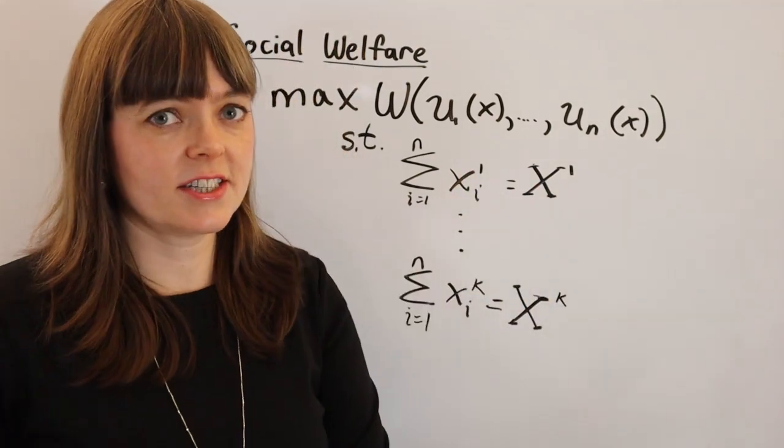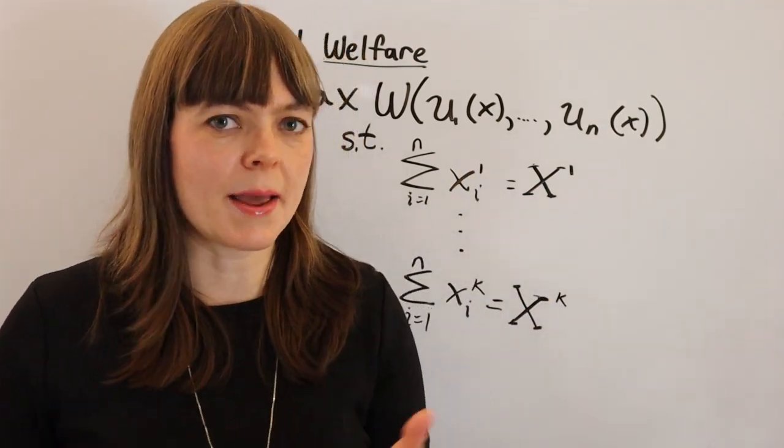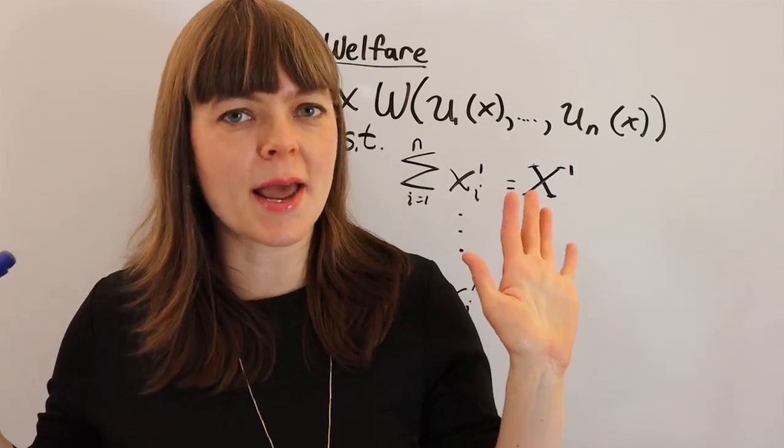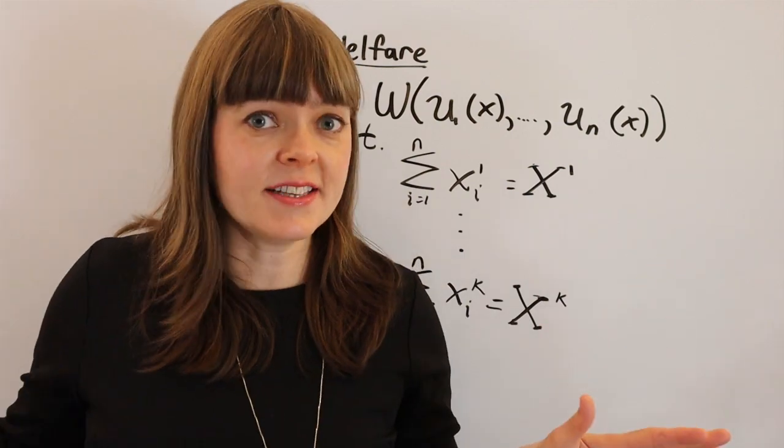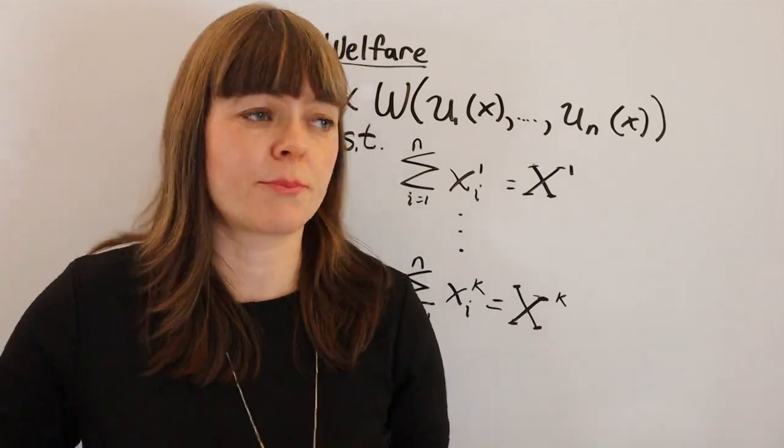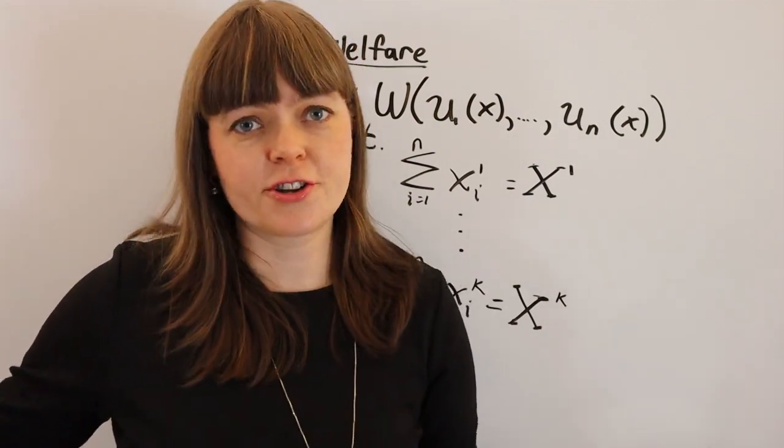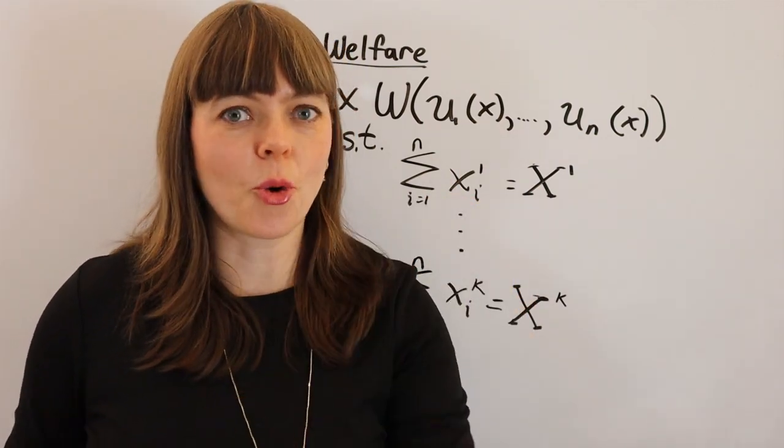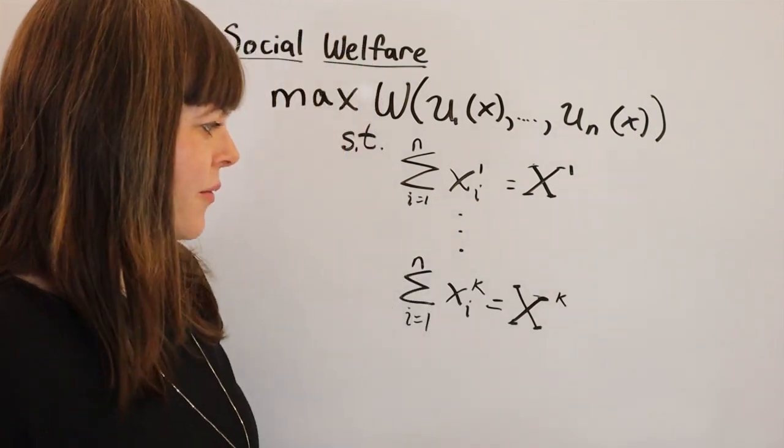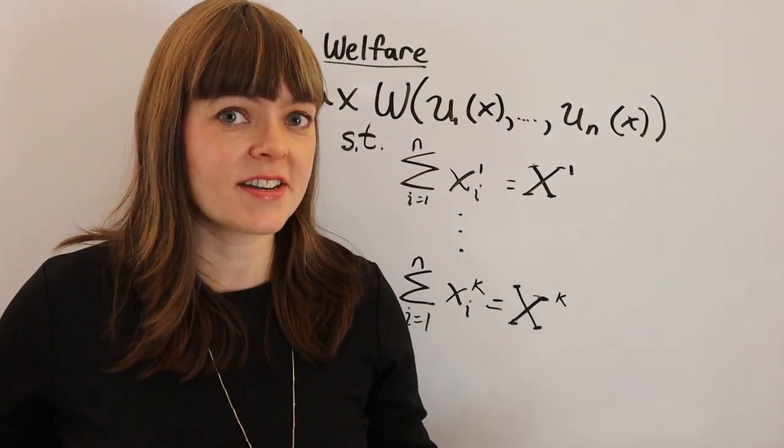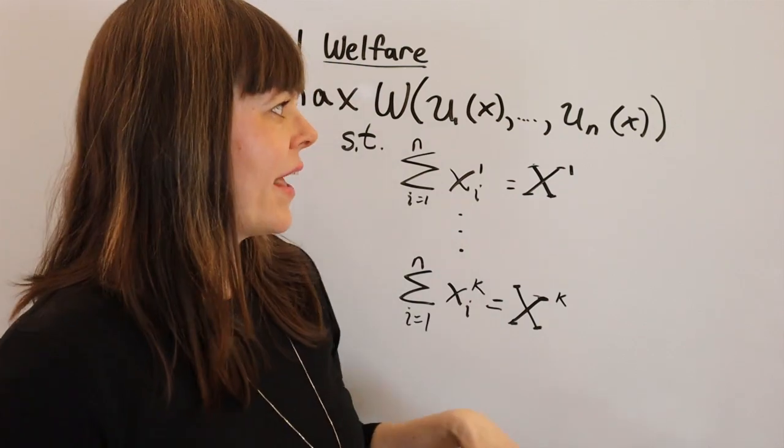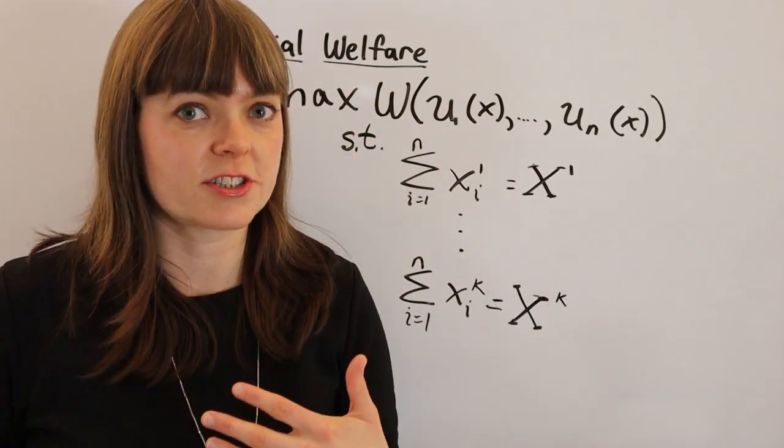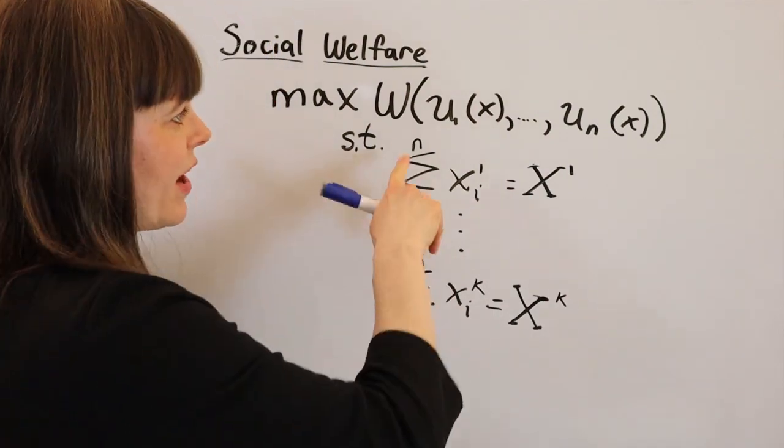And then the second decision they have to make as roommates is about TV time. And there are 20 hours of prime time TV, and they have very different tastes in terms of what they like to watch. One person likes to watch cartoons, another likes to watch reality shows, and another likes to watch gory dramas. So they can't watch TV together, they have to divide up that shared space among them, and that's going to be the scenario that we'll interpret this social welfare function around.